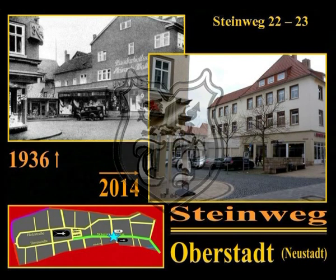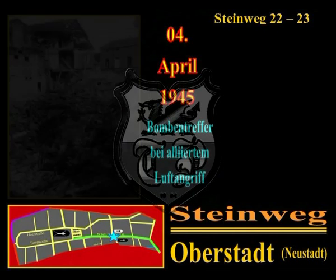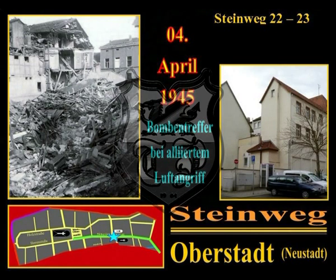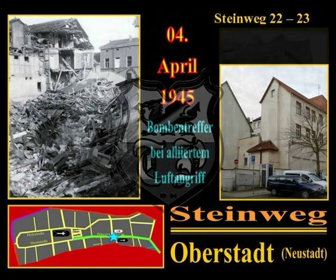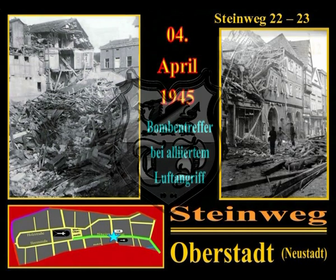Am 4. April 1945 änderte sich diese Straßenansicht grundlegend: knapp einen Monat vor Ende des 2. Weltkrieges wurde das Haus Flora an der oberen Brückenstraße sowie die Häuser 22 und 23 am Steinweg bei einem alliierten Luftangriff zerstört. Die Schäden dieses Bombentreffers waren erheblich – und trotzdem hatte Mühlhausen noch Glück: bei der Bombe, die die beiden Häuser traf, handelte es sich um eine reine Sprengbombe. Ein Brandbombentreffer hätte in der dicht bebauten Innenstadt einen wesentlich größeren Schaden angerichtet.